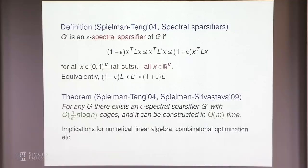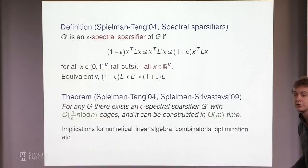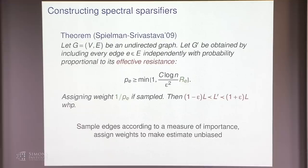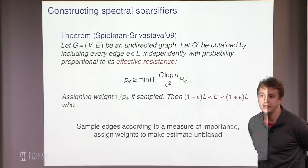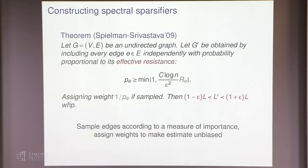Spectral sparsification has found many applications in numerical linear algebra, combinatorial optimization, and other areas. Spielman-Teng and then Spielman-Srivastava showed that every graph G admits a spectral sparsifier with about n log n edges, constructible in nearly linear time in the number of edges. However, the Spielman-Srivastava algorithm works when the graph resides in RAM. Suppose instead the graph is given as a stream of edges — is it possible to construct a spectral sparsifier maintaining n log n memory at all times?